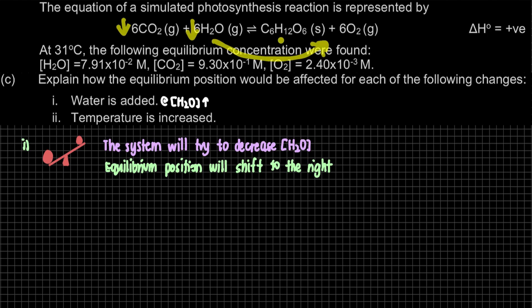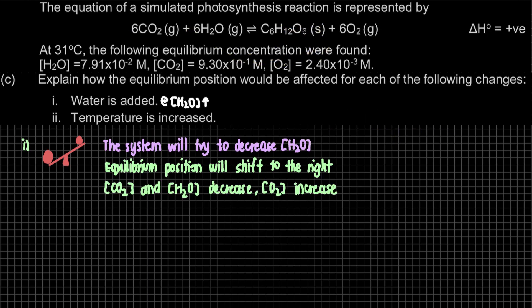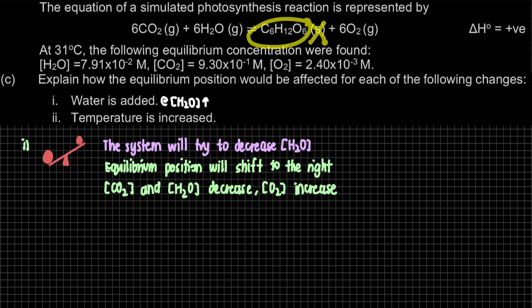Concentration of O₂ increases since it is a product being formed. For glucose, since it is a solid, its concentration is not included — Kc only applies to gas and aqueous species, and the concentration of a solid remains effectively constant. So we only report: concentration of CO₂ and H₂O decrease, O₂ increases.